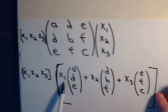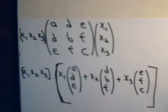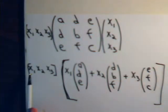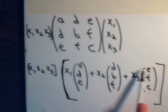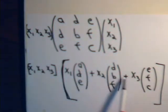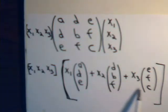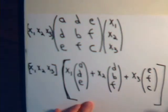So now we have this times this row vector. This row vector has three members: x1, x2, x3. The first member here multiplies the first row. The second member multiplies across the second row. The third member multiplies across the third row.